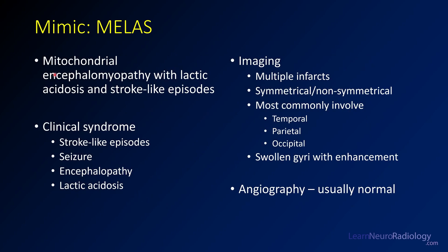This is MELAS — mitochondrial encephalopathy with lactic acidosis and stroke-like symptoms. Patients get stroke-like episodes, seizures, encephalopathy, and lactic acidosis. They develop multiple infarcts that can be symmetrical or not, most commonly involving the temporal and parietal lobes. You'll see swollen gyri with enhancement. Angiography — catheter angiogram, MRA, or CTA — is usually normal, as in this case. These findings can often improve when the underlying condition is treated.